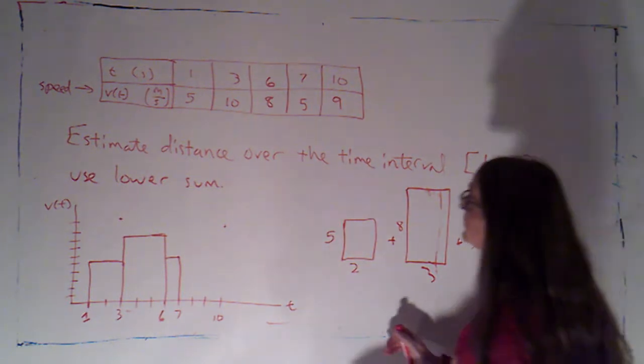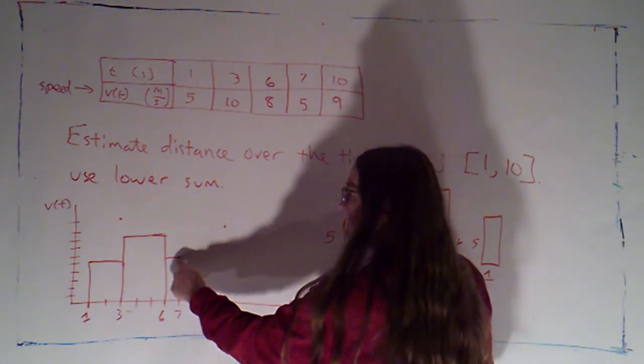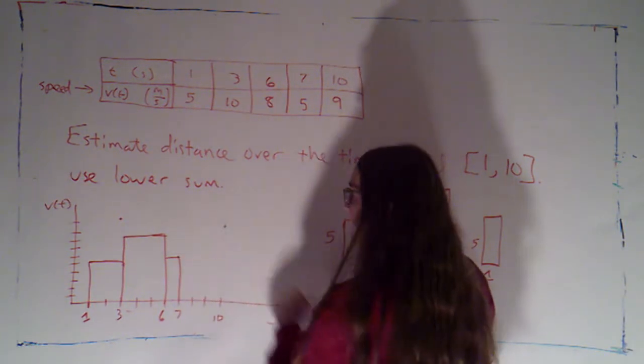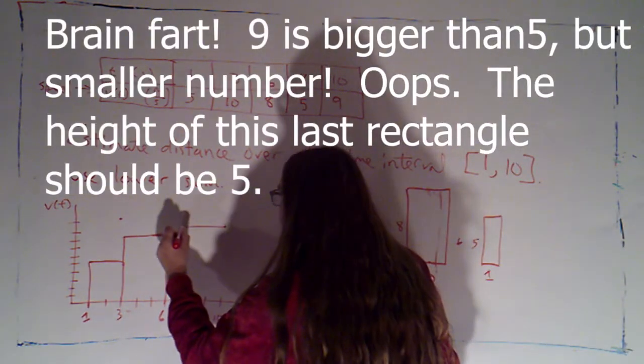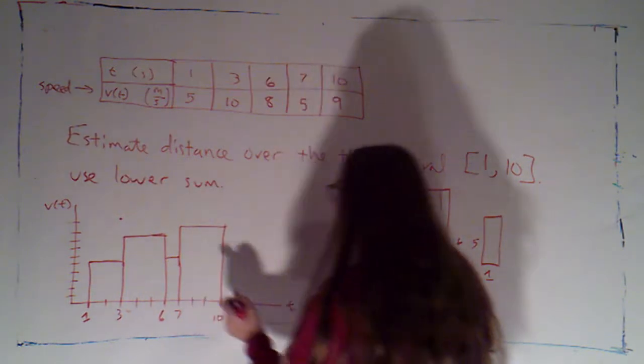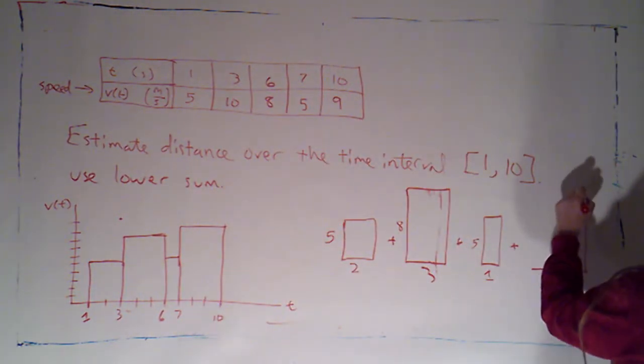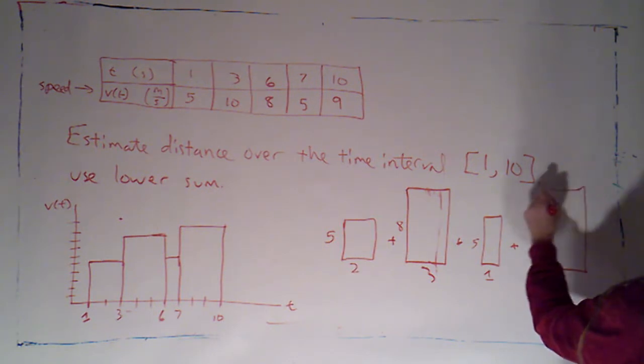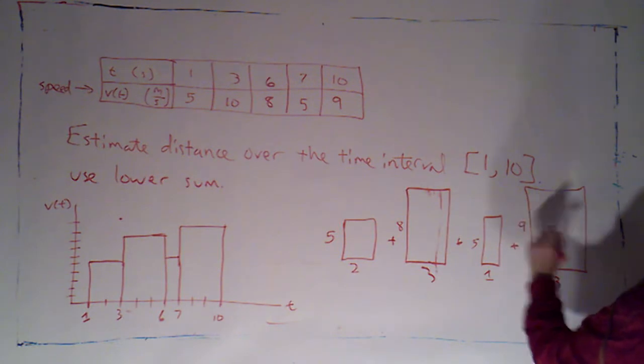And then my last interval goes from 7 to 10. The speed at 7 was 5. The speed at 10 is 9. 9 is definitely bigger. So I'll extend that across this entire interval and then just draw in the vertical sides of my rectangle. So that's giving me something like so. Where the base is 3 and the height is 9.